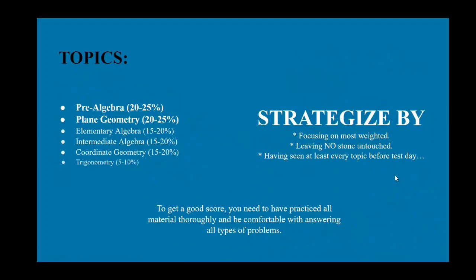The topics are listed in order of most weighted and most heavily seen on the exam. Pre-algebra and plane geometry are about 20 to 25 percent of the exam. Elementary algebra, intermediate algebra, and coordinate geometry are 15 to 20 percent each, and only five to ten percent is trigonometry.